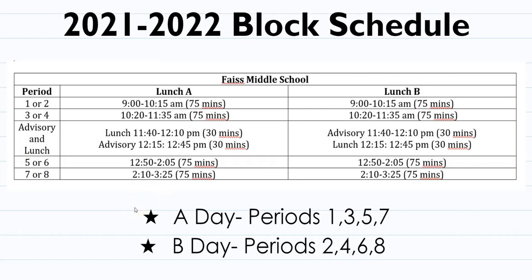This is what your block schedule will look like for next school year. You have period one or two from 9:00 to 10:15 every day, then periods three or four from 10:20 to 11:35, followed by advisory and lunch in the middle of the day. We only have two lunches next year: Lunch A and Lunch B. Lunch A is from 11:40 to 12:10 followed by advisory from 12:15 to 12:45. Lunch B starts with advisory from 11:40 to 12:10, then lunch from 12:15 to 12:45. After lunch, fifth or sixth period runs 12:50 to 2:05, then seventh or eighth period from 2:10 to 3:25. A days are periods one, three, five, and seven; B days are periods two, four, six, and eight.